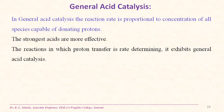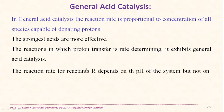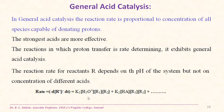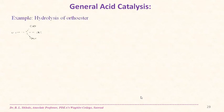In general acid catalysis, the reaction rate is proportional to the concentration of all species capable of donating protons. The strongest acids are more effective. Reactions in which proton transfer is rate-determining exhibit general acid catalysis. The rate depends on pH and on the concentration of all acid species: rate = k₁[H₃O⁺][R₁][R₂] + k₂[HA][R₁][R₂].